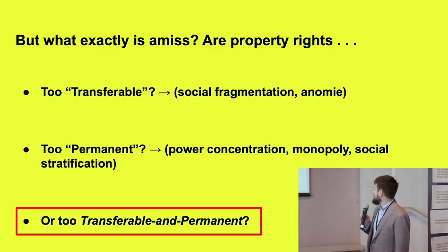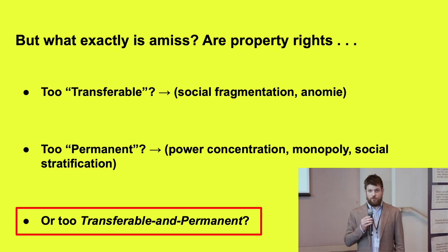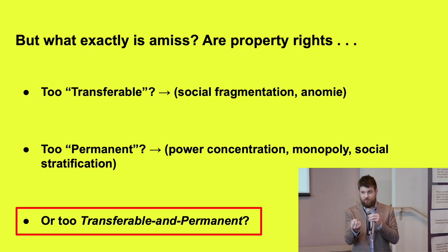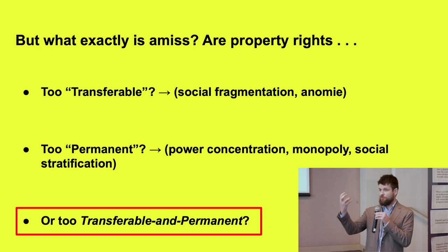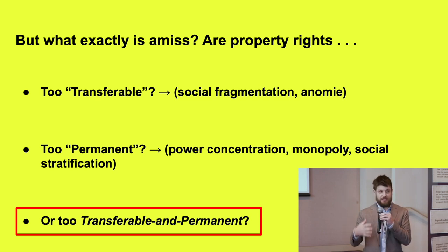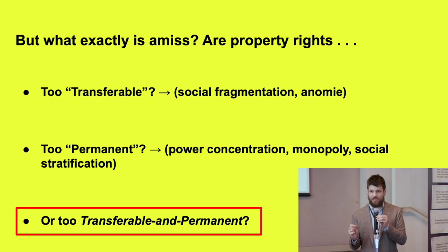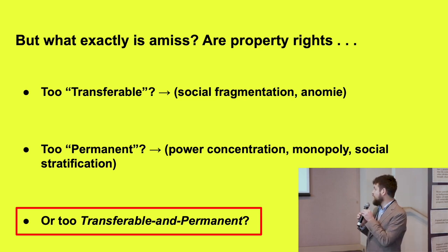So what exactly is amiss with property rights? One way of thinking about it is that property rights are too transferable — their ability to go to the highest bidder pulls communities apart, pulls power out of communities, and leads to social fragmentation and anomie. Another possible problem is that they're too permanent: the fact that they last forever and give their holder permanent power leads to compounding power, power concentration, monopoly, and social stratification. These two problems can seem to be in tension, which is confounding. But another way of thinking about it is that the problem with property is really the marriage of these two characteristics — too transferable and too permanent together — that makes the property regime we've inherited what it is.